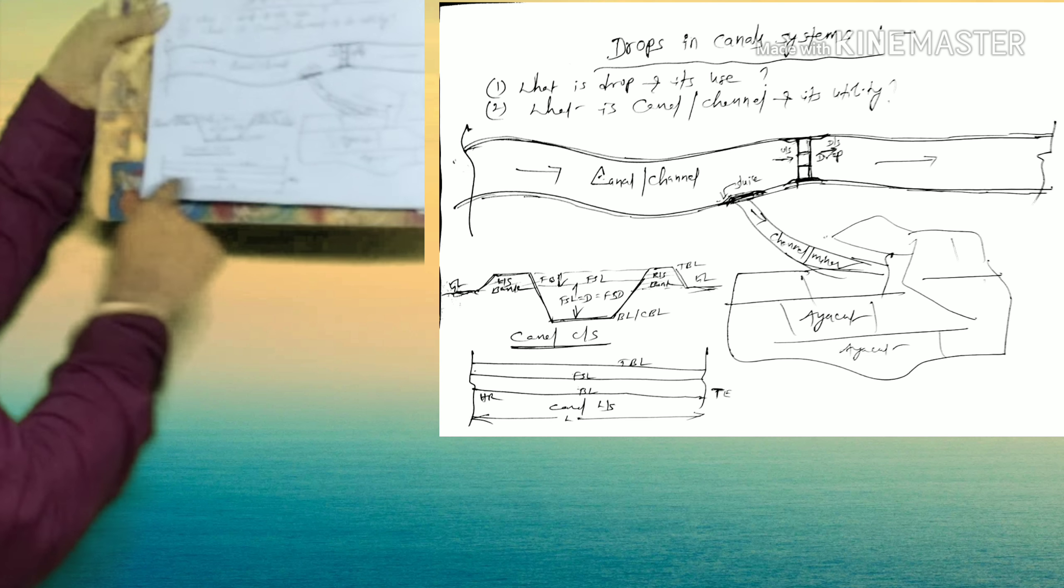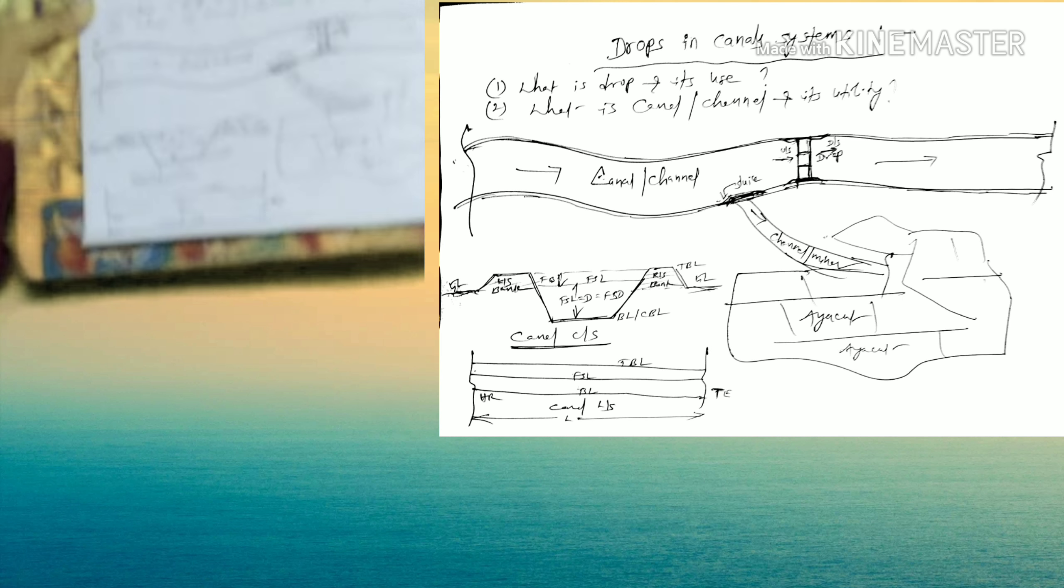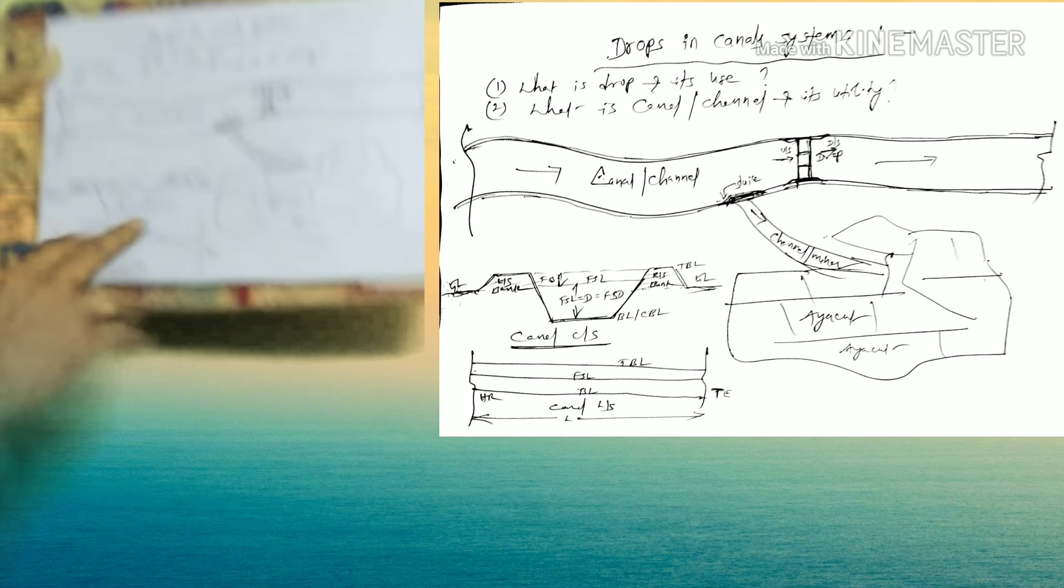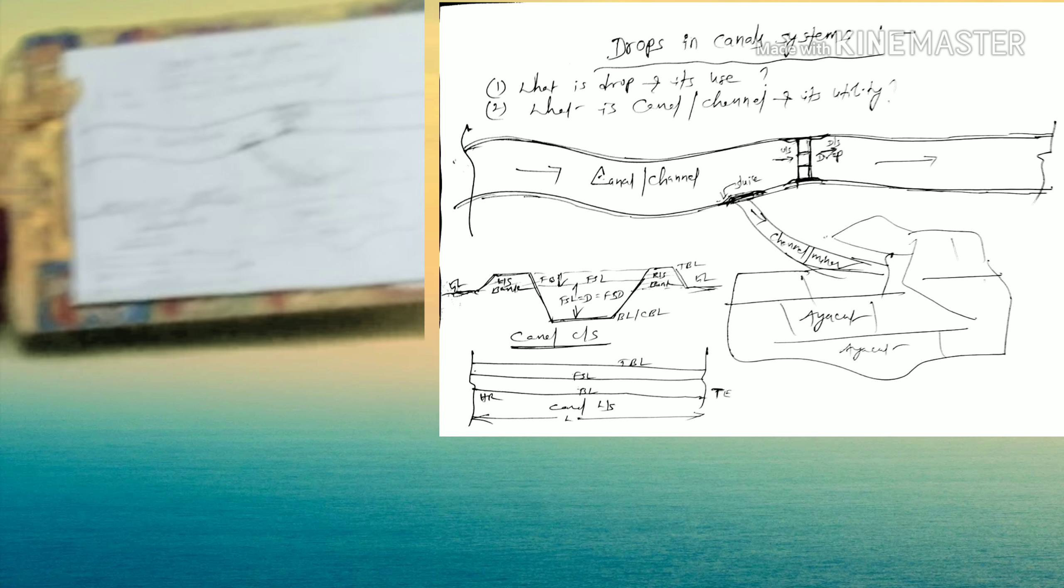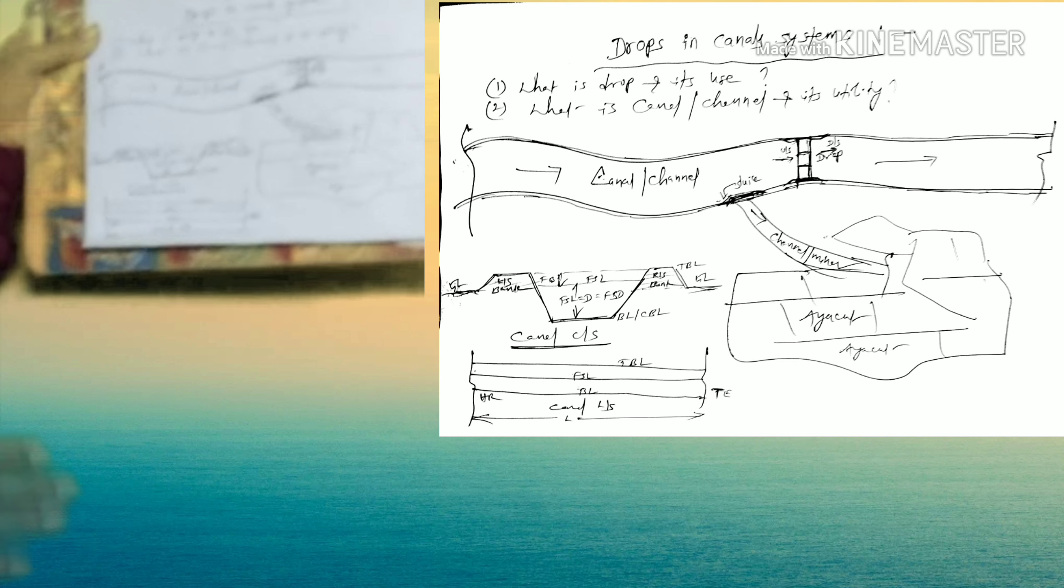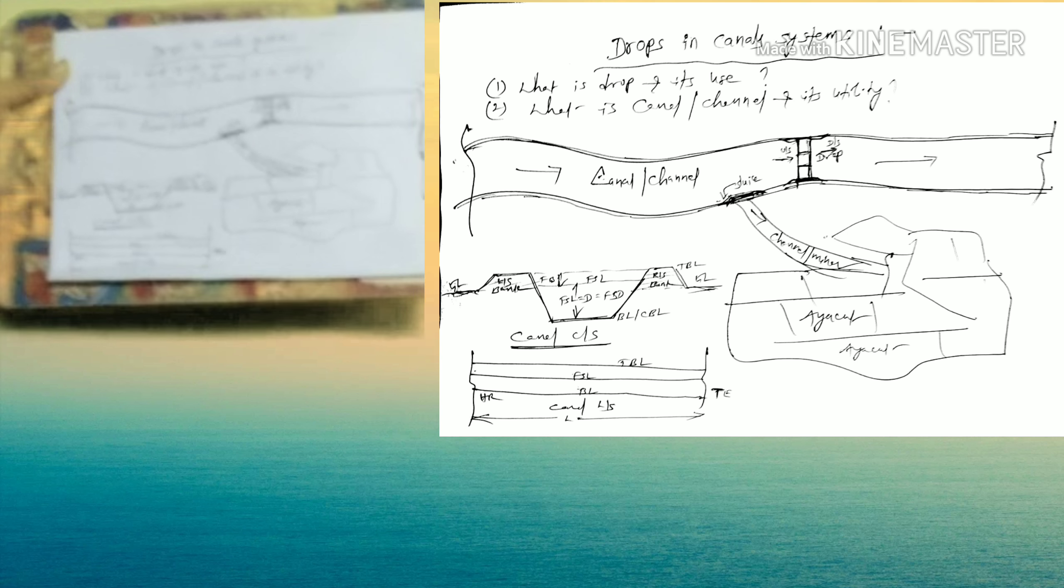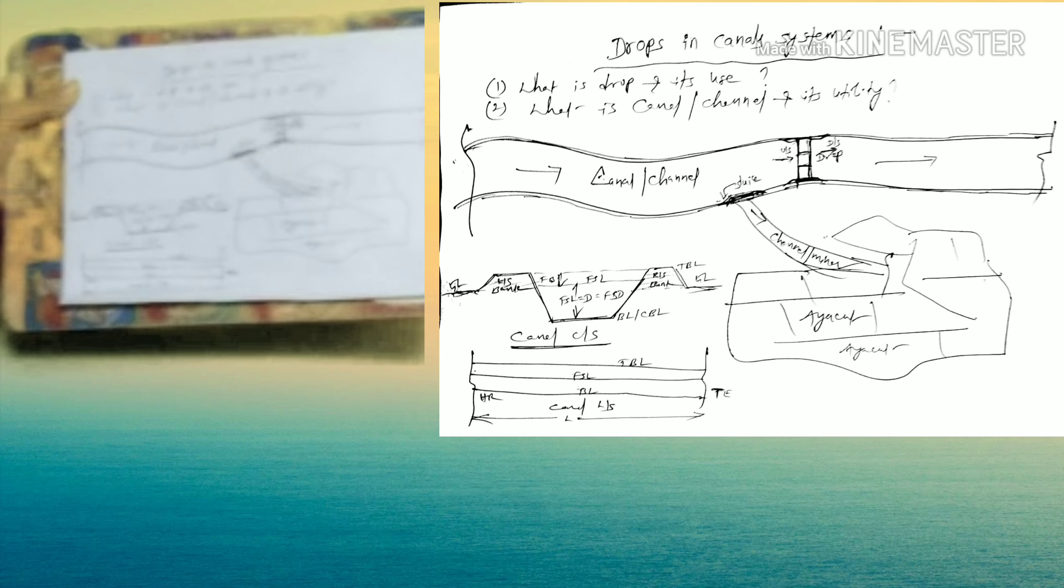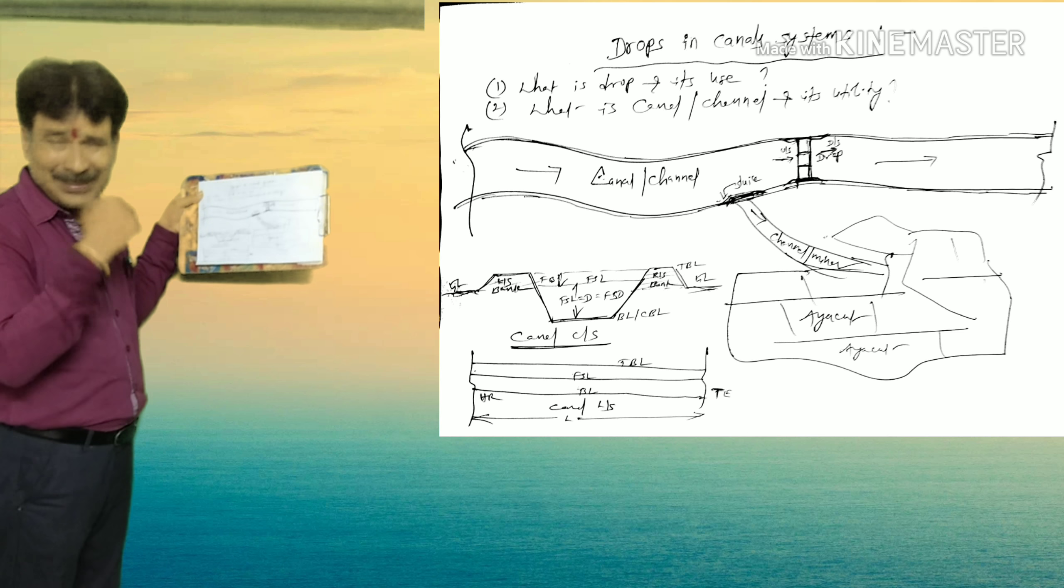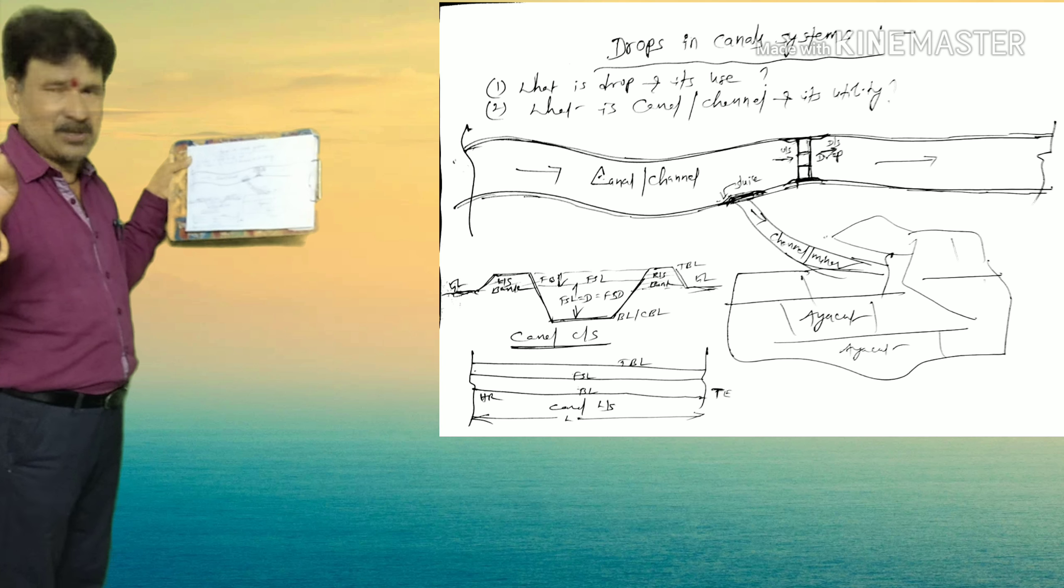And here, this is the longitudinal section showing bed level, FSL, TBL. Generally, we take levels at a distance of 25 meters. For estimation purpose, for detailed estimate, we have to prepare the estimate at 25 meters intervals. And for line estimate, you may take levels at 100 meters also, for jungle clearance, or banking, or silt, for recording purpose. And for detailed estimate, take levels at 25 meter intervals.